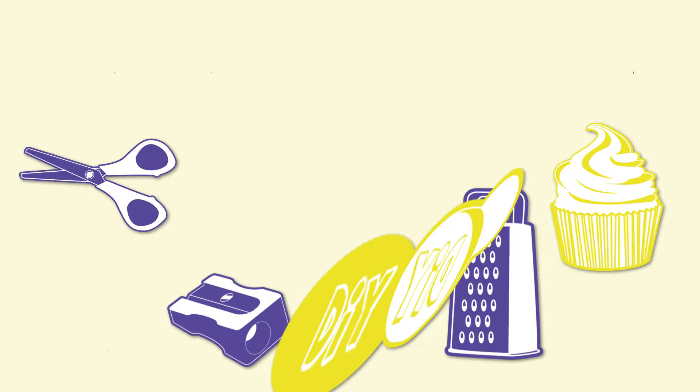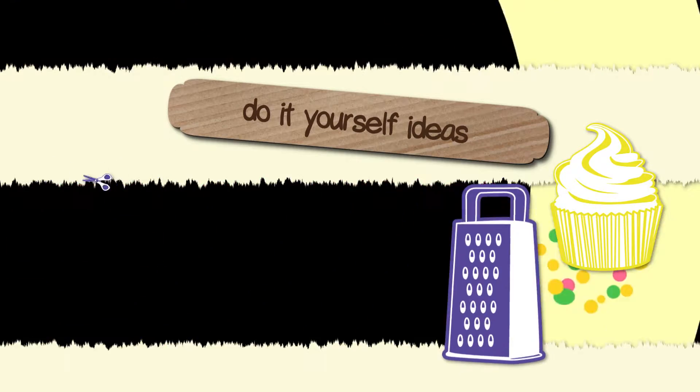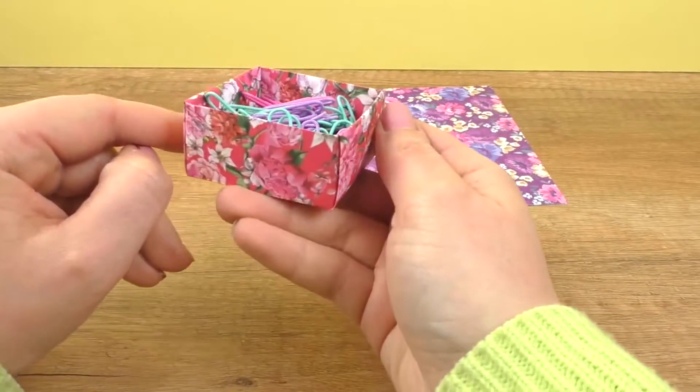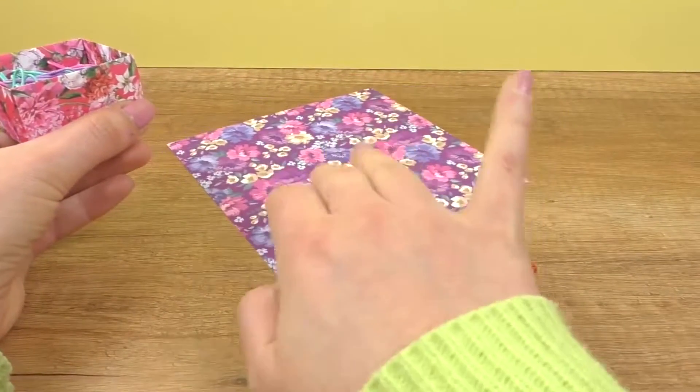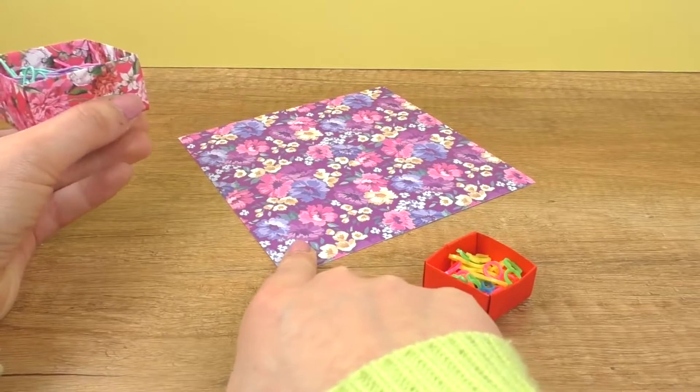Hello everyone and welcome to a new video from DIY Ideas. Today I'm going to show you instructions to fold this super cute little box here. We make it out of a square piece of paper, so all four sides are the same length.